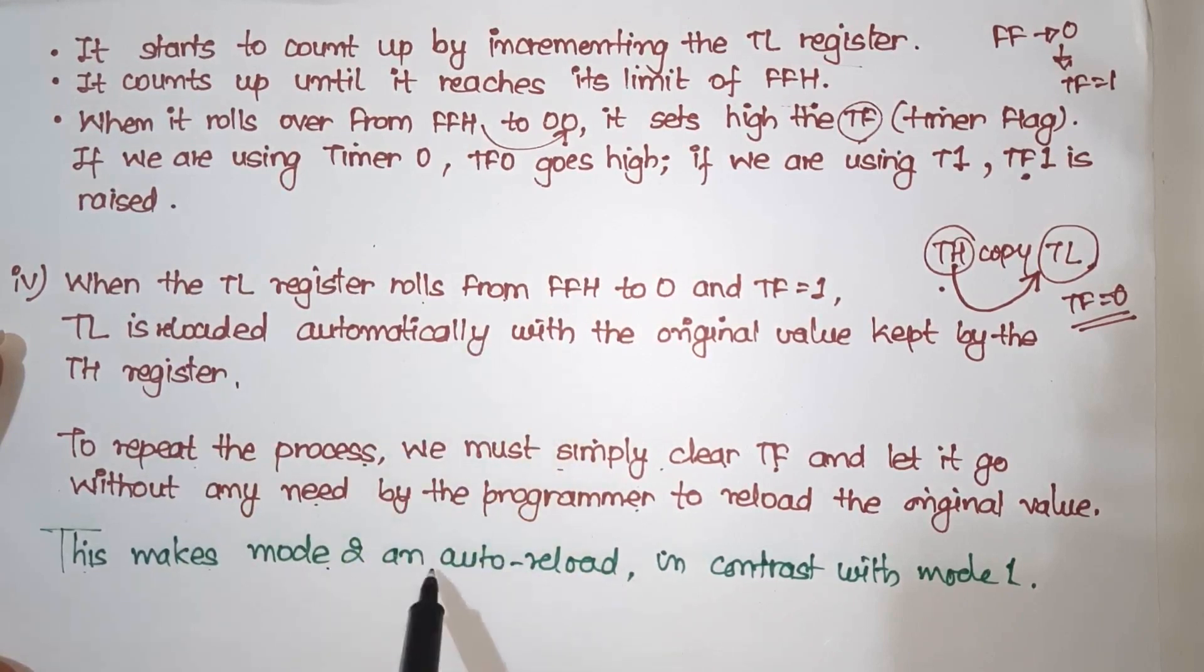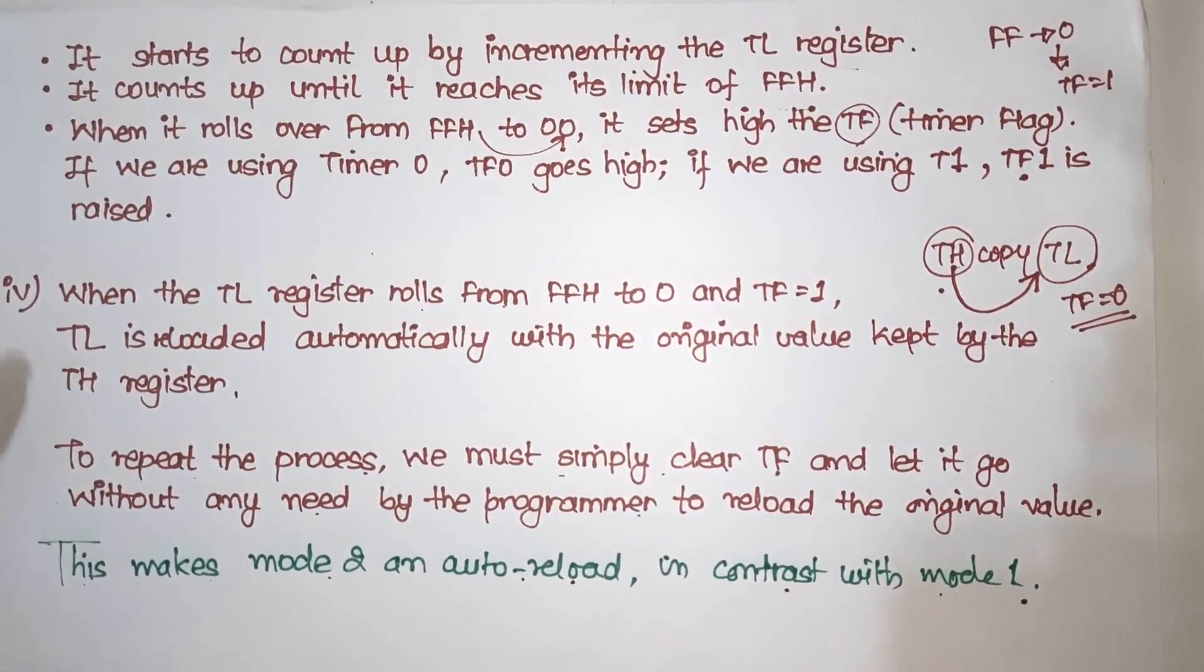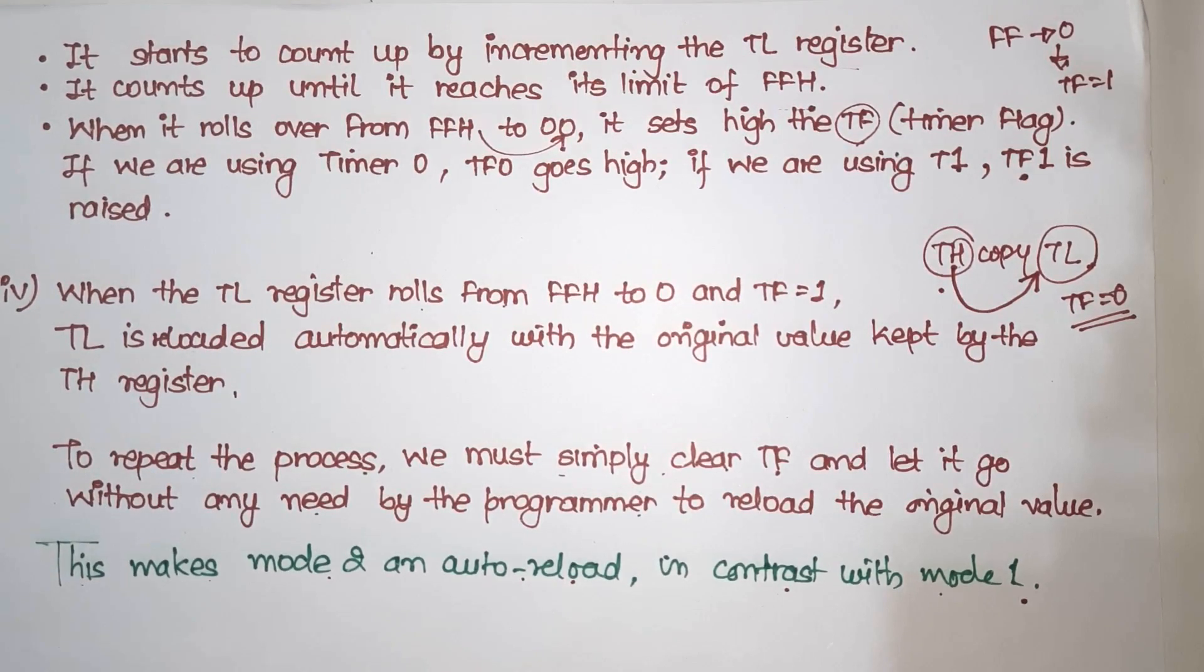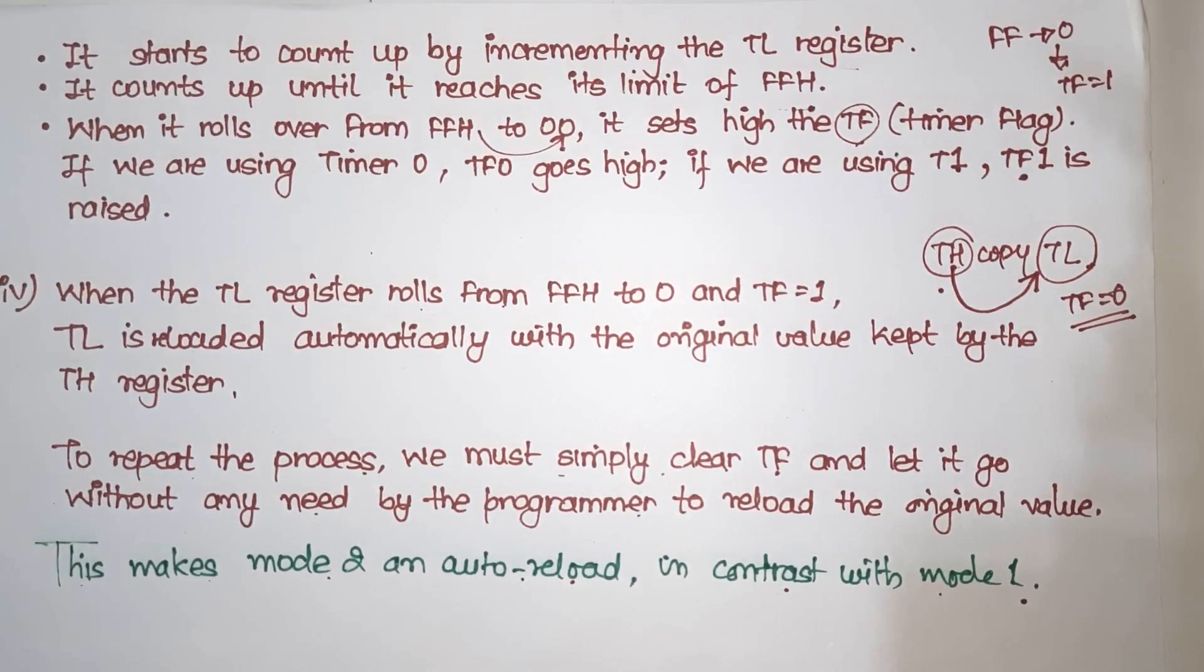This is the reason why it is called auto-reload. This makes mode 2 an auto-reload mode in contrast with mode 1. Mode 1 was also the same: it reaches maximum value, then it rolls over, then TF becomes 1. But what was the difference? We had to put the programmer original value back to the programmer. But not here. This gets auto-reloaded. So this is the difference between mode 0, mode 1, and mode 2. So these are the three modes that you need to know carefully.